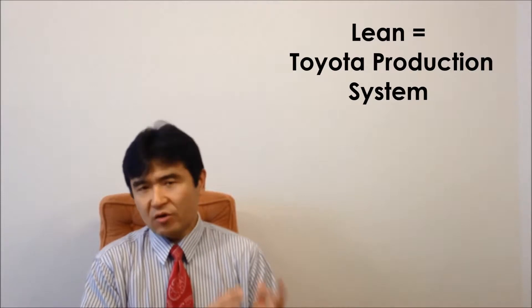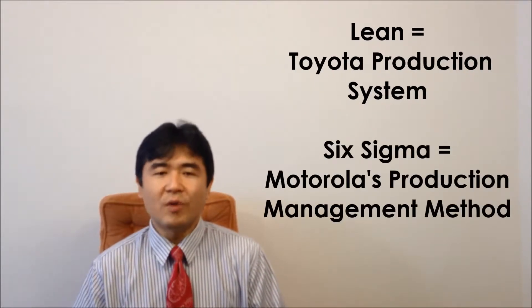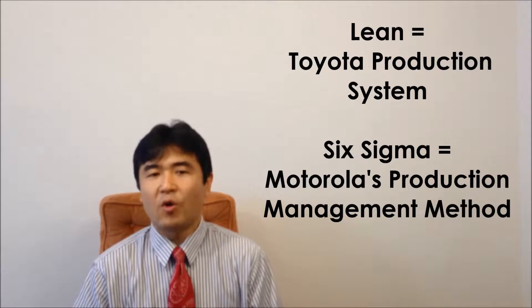Lean came from the Toyota production system. Six Sigma is a production management method developed by Motorola.